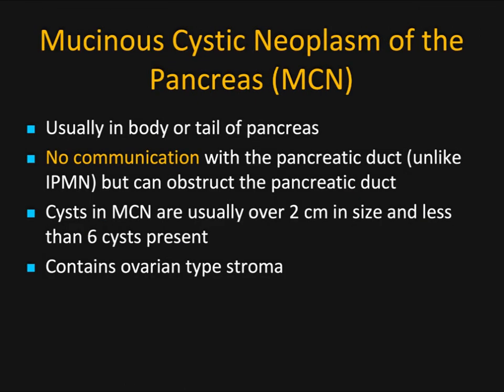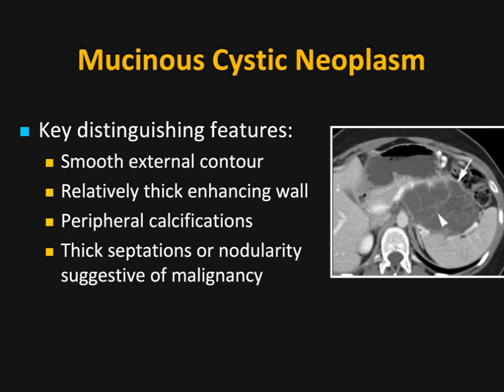Going back to mucinous cystic neoplasms specifically: they're usually in the body or tail of the pancreas with no communication with the pancreatic duct, though if they get large enough they can obstruct it — helping separate MCN from IPMN. Cysts in MCN are usually over two centimeters, and there are fewer than six cysts present. MCN contains an ovarian-type stroma, which is why some cystic lesions with septations look very much like ovarian malignancies. Key imaging features include a smooth external contour, relatively thick enhancing wall, peripheral calcifications, and thick septations and nodularity suggestive of malignancy.